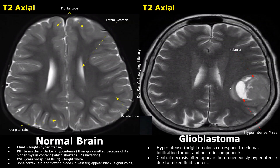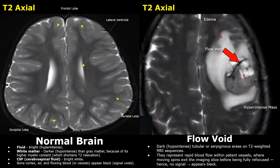Comparison of T2 images with T1, T1 contrast, and FLAIR images is very helpful in the diagnosis of glioblastoma. In some cases, you may see flow voids on T2 images. A flow void appears as hypo-intense tubular or serpiginous areas inside a mass. This is seen when there is rapid blood flow within a vessel, so you may find these flow voids in some glioblastoma cases. Also, there is edema near the tumor.